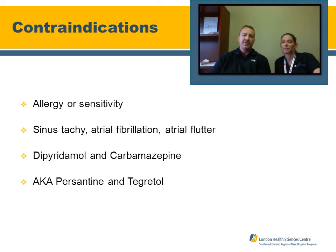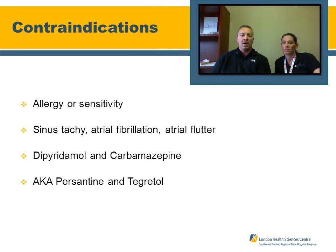Contraindications for adenosine include allergy or sensitivity. If the rhythm confirmed on a 12-lead is sinus tachycardia, atrial fibrillation, or atrial flutter, adenosine will have no effect. If the patient is taking carbamazepine, Aggrenox, or Persantine — also known as dipyridamole — adenosine is contraindicated. Adenosine will be potentiated by dipyridamole and Persantine, and blocked by carbamazepine (Tegretol).